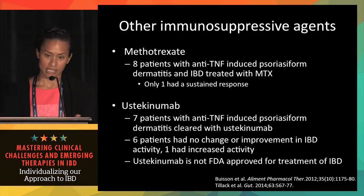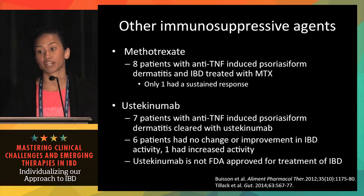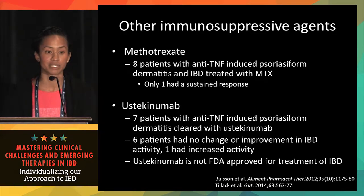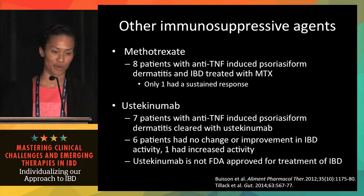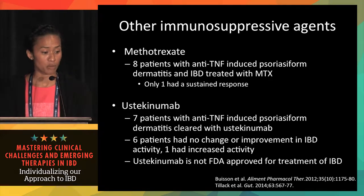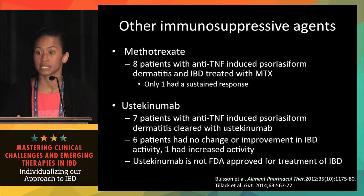Ustekinumab — a monoclonal antibody against IL-12 and IL-23 — has been shown to be effective in not only treating severe refractory anti-TNF-induced psoriasiform dermatitis, but also in managing IBD symptoms. Since it is now FDA approved for the treatment of IBD, it would prove to be a really good option for patients who develop severe anti-TNF-induced psoriasiform dermatitis and need another option for managing both their IBD and their skin disease.